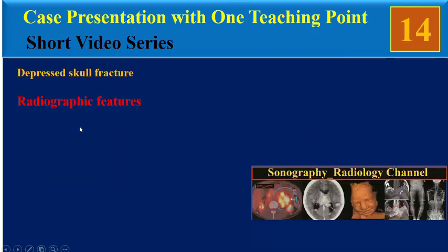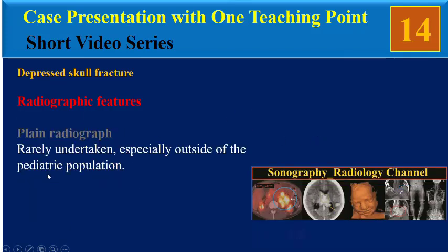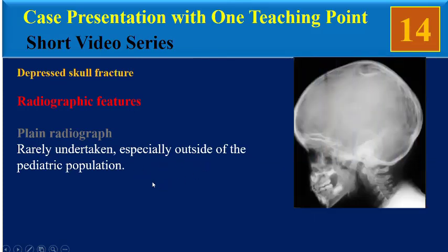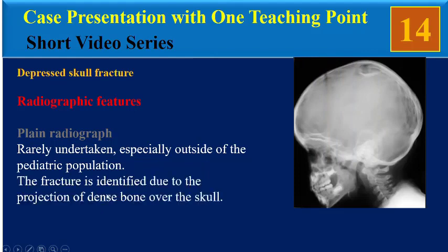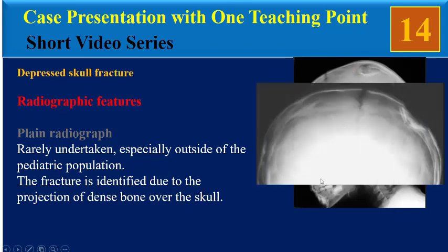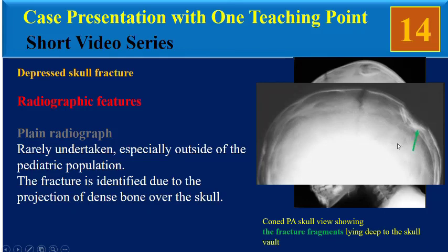Radiographic features of depressed skull fractures: plain radiograph is rarely undertaken, especially outside of the pediatric population. The fracture is identified due to the projection of dense bone over the skull. This lateral skull view shows increased density associated with the overlapping bone fragments of the depressed left parietal fracture. And in this Caldwell PA skull view showing the fragmented fractures lying deep to the skull vault.